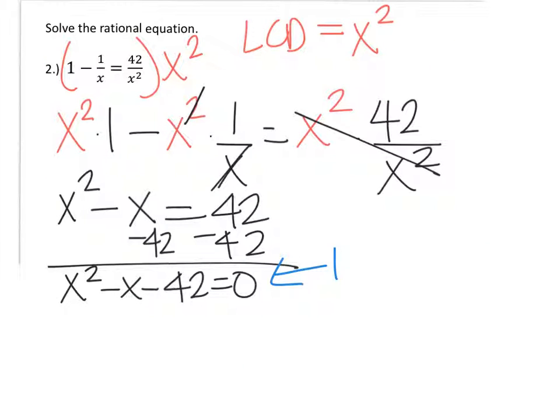Now here I'm going to factor and then set my factors equal to 0 and solve for x. So I have a trinomial, I'm going to factor into two binomials. I need two numbers that will multiply to give me negative 42 and add to give me negative 1.